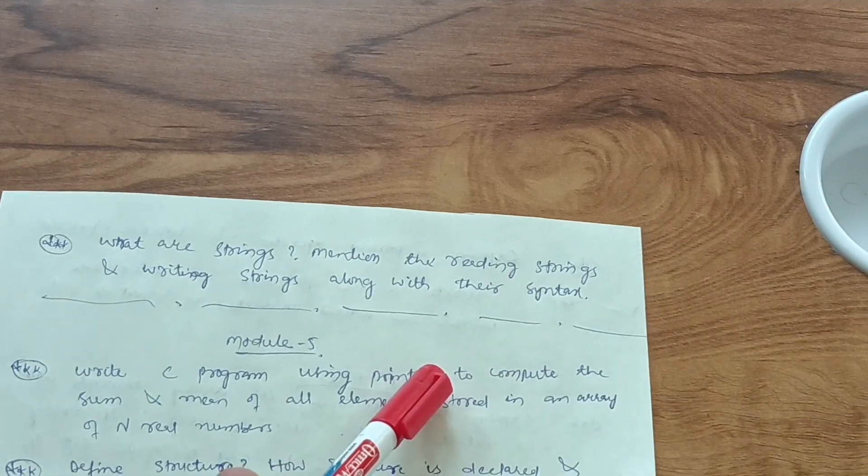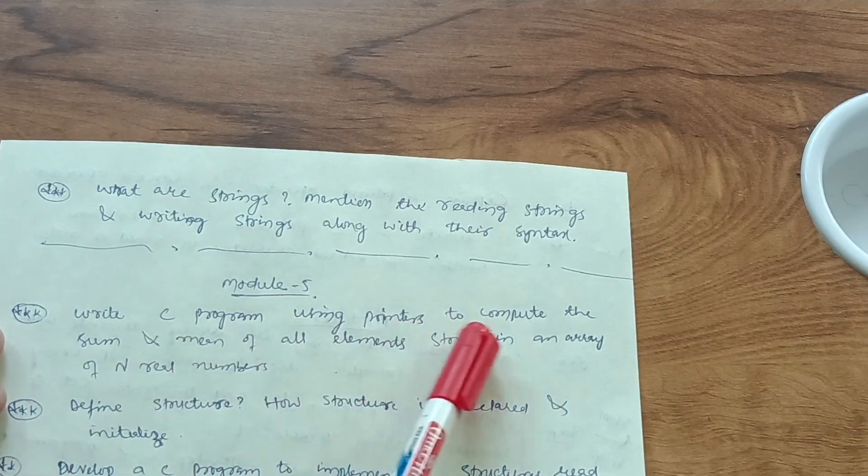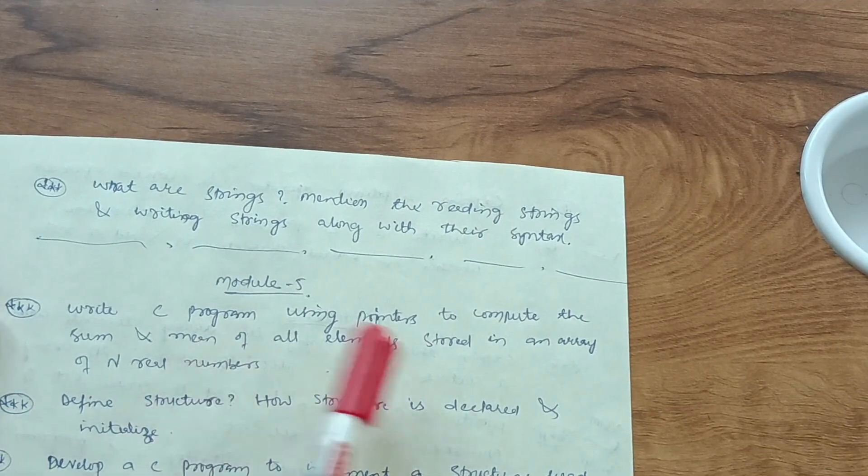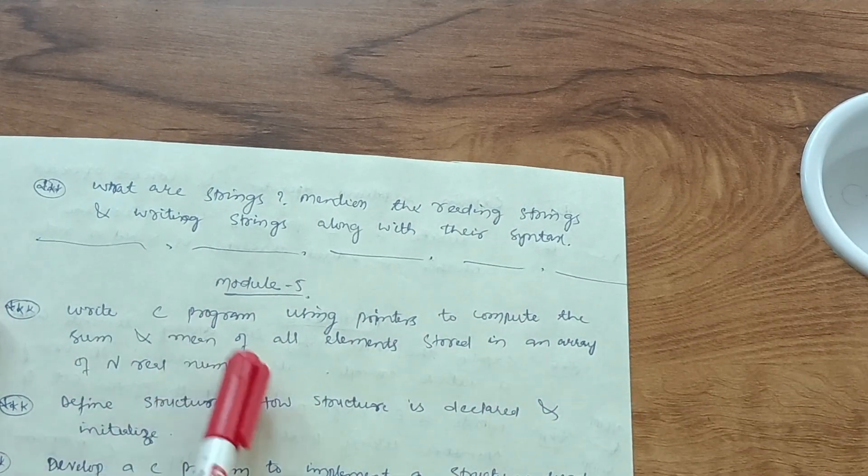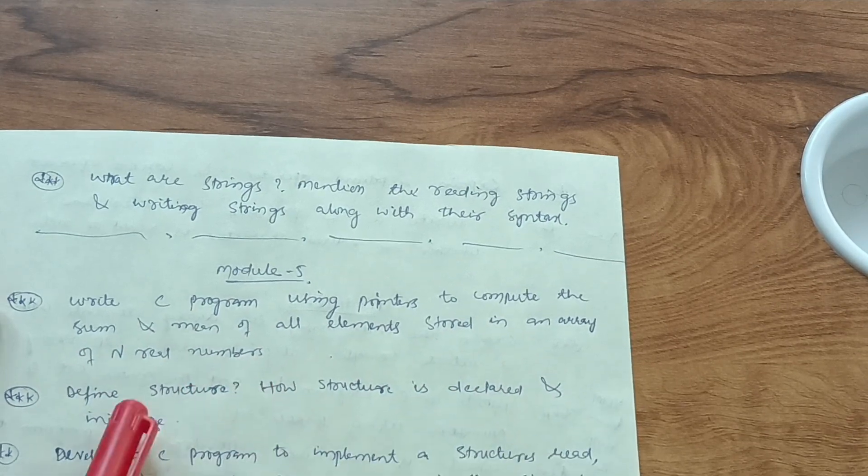Then module fifth comes up where you have to cover write C program using pointers to compute the sum and mean, and sometimes also deviation will be there, like to compute the sum and mean and deviation of all elements stored in an array of n real numbers. You go through deviation also. Define structure. How structure is declared and initialized.